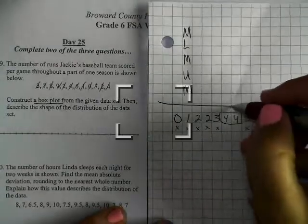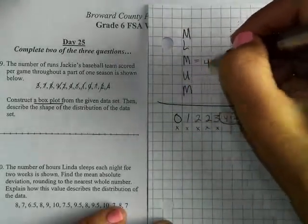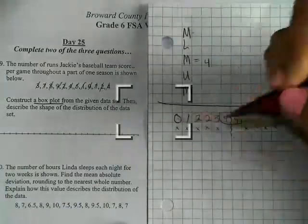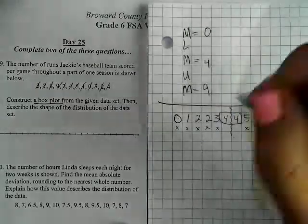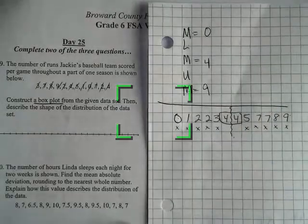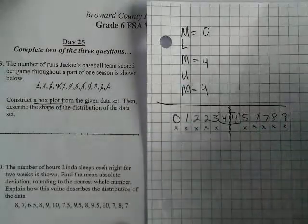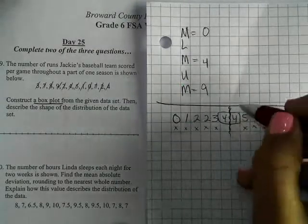For the median, eliminate from outwards in. There are two numbers on each side left, so that makes the median four. The median is four. The minimum number is zero and the maximum number is nine.